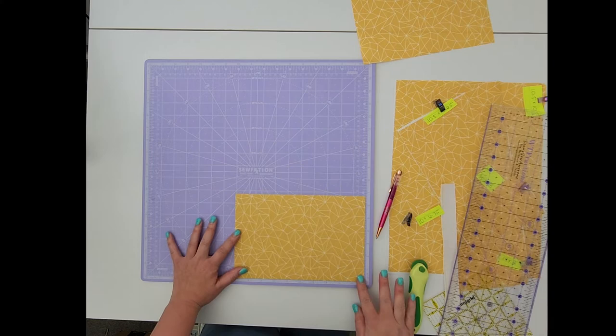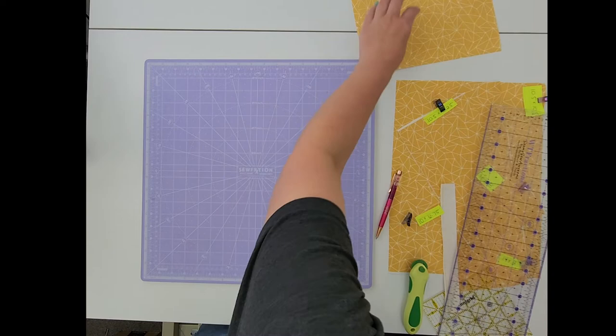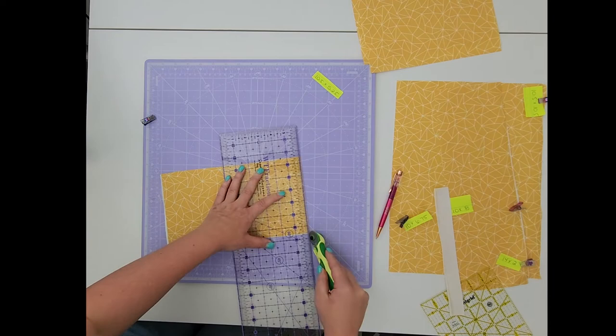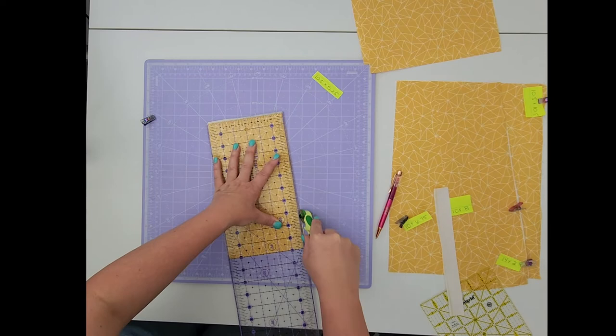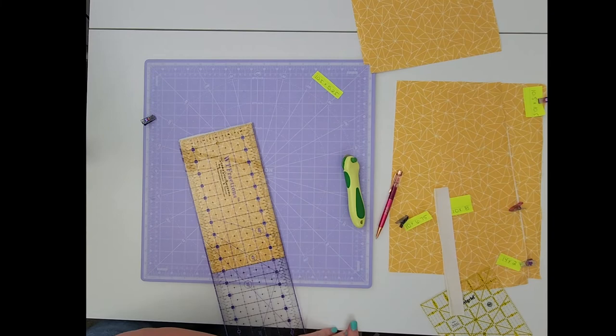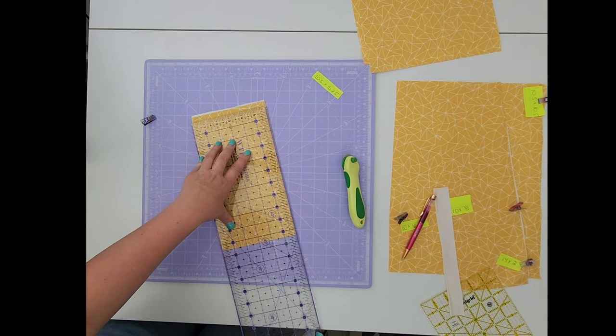Moving along to the next piece, we'll be doing ten and a half by five and a quarter. Cut our straight edge on one side, lining up the bottom with the straight edge. Make sure to catch all the fabric and cut our 90 degree corner. Mark our ten and a half inch and cut the third side down.